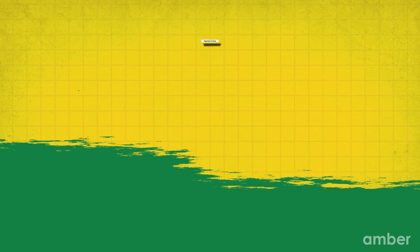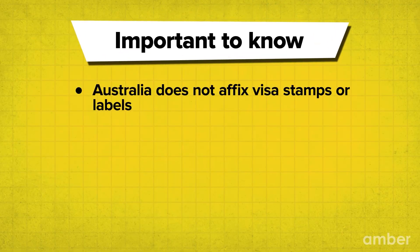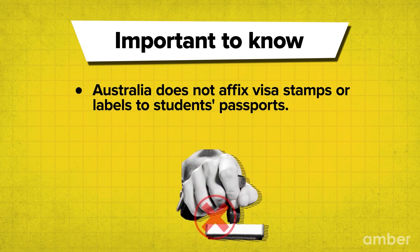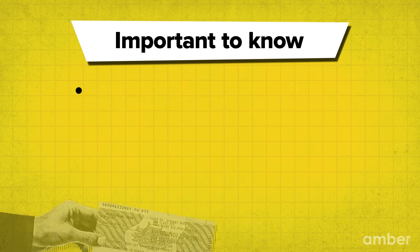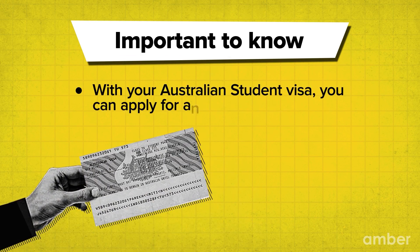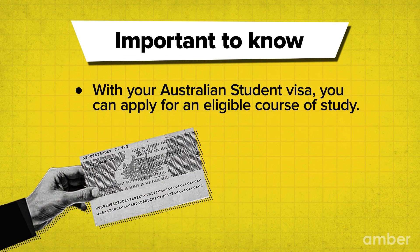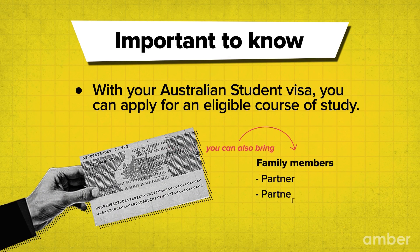An Australian student visa is a document that will allow you to visit the country as a student for a specific amount of time. It's important to know that Australia does not affix visa stamps or labels to students' passports, unlike most nations. With your Australian student visa, you can apply for an eligible course of study and can also bring your family member, including your partner or your partner's dependent child.